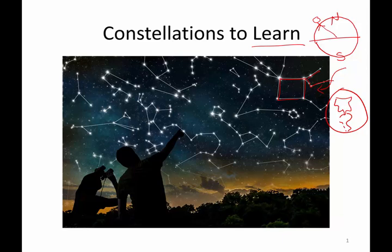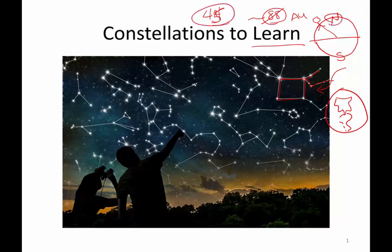There are exactly 88 constellations that have been defined by the International Astronomical Union. About half of those — about 44 — are actually visible in the north, and parts of another one, so 45 that are visible in the north. Those are the 45 that are going to be in this set of notes.